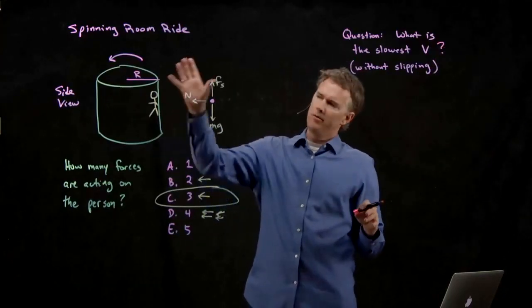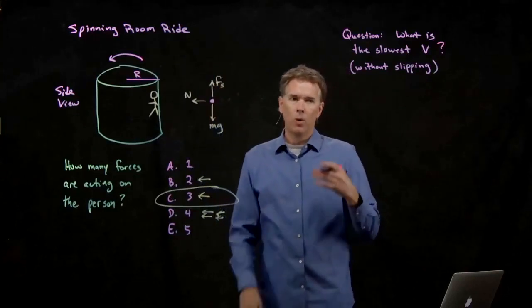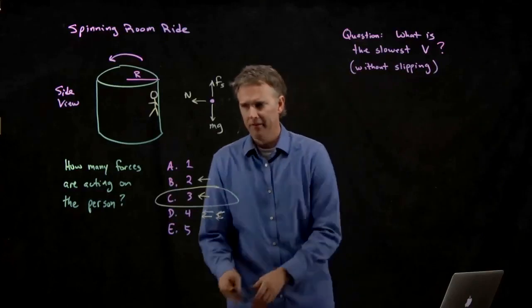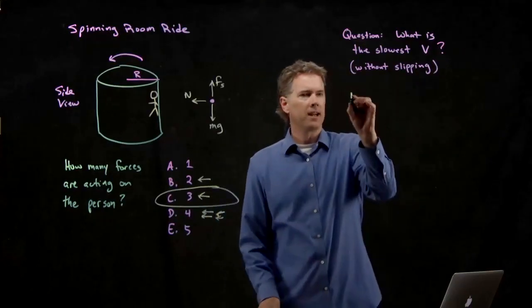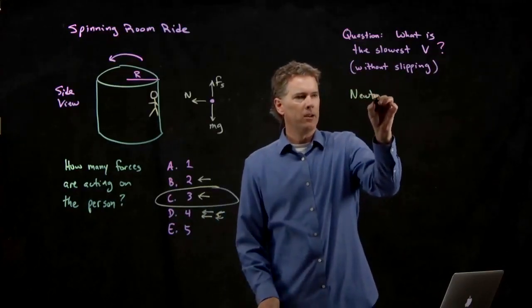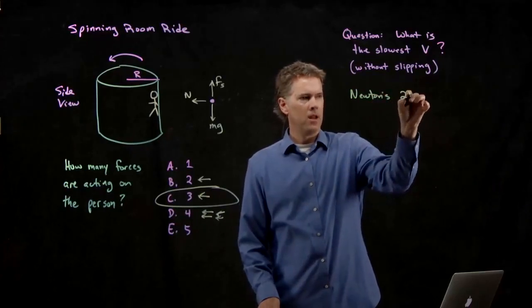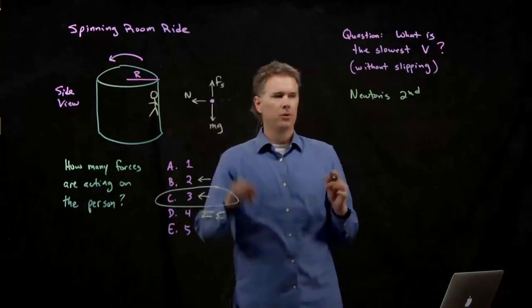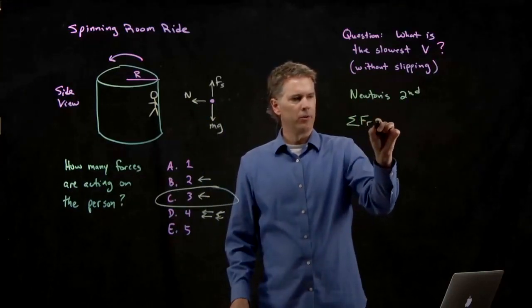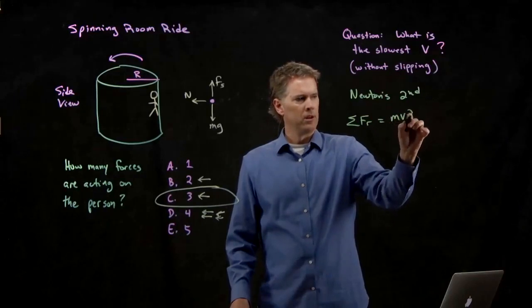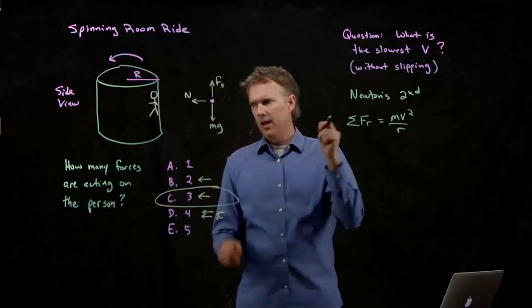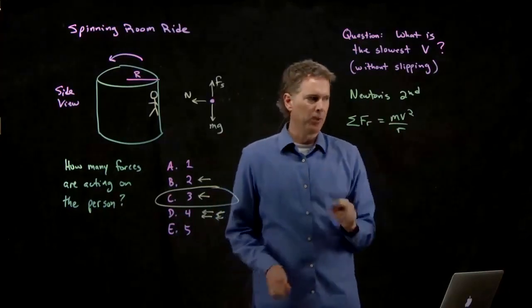What is the slowest V that we could possibly use? And how do we figure this out? Well, we've got a picture. We've got a free body diagram. We want to go to Newton's second law now. And specifically, we're worried about Newton's second in the radial direction and in the vertical direction.